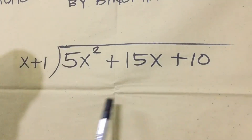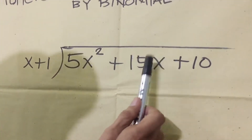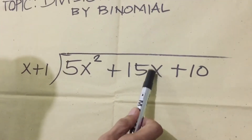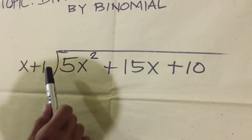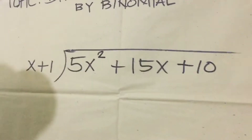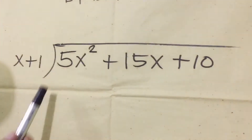So it should be in order. If there is no x term, we should place zero in that position — it must be included. Okay, so how do we divide this?